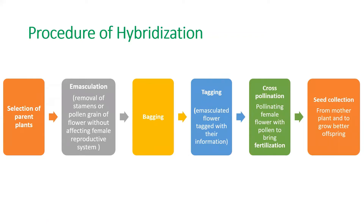Now the procedure of hybridization — how we carry out the process. First of all, we have to select a parent plant on which we will perform hybridization. Then we emasculate the flower of the parent plant. Emasculation is the removal of stamens or pollen grains, that is, the male reproductive system, without affecting the female reproductive system of the flower.